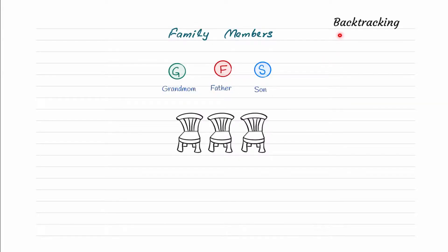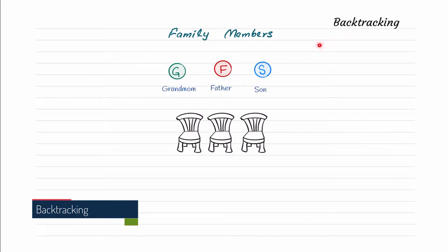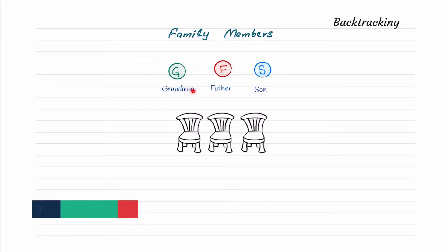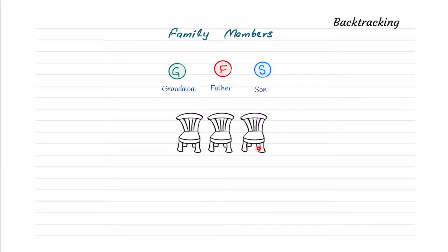Hello, today we will look into backtracking. To understand it, we will first look into an example. Suppose there are three family members — grandmom, father, and son. They visit a photographer to take their family photo, and there are three seats. What are the possible sitting arrangements?